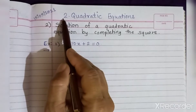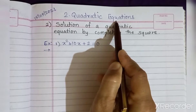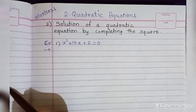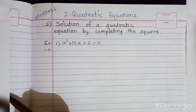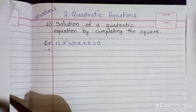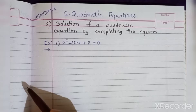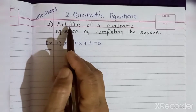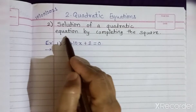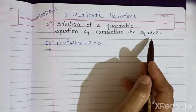Hello students, Chapter 2 - Quadratic Equations. We are studying how to find the roots of a given quadratic equation by different methods. The first method, factorization, was studied in the last video. Now this is the second method: solution of a quadratic equation by completing the square - the completing square method.